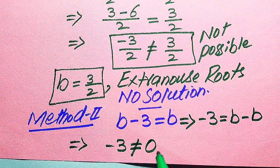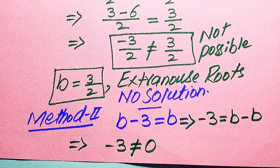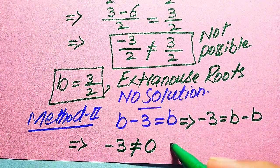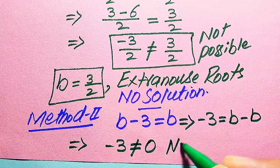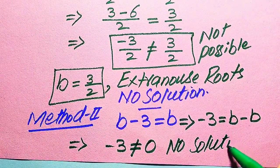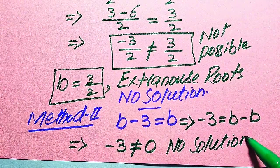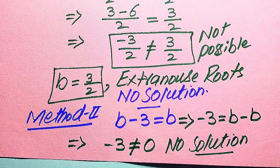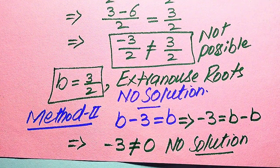In Method 2 we also cannot get any value of b that satisfies the given equation, so we finally conclude that this equation has no solution in general. This is the final answer. Thank you so much for watching this video — please subscribe to my channel for more exciting videos.